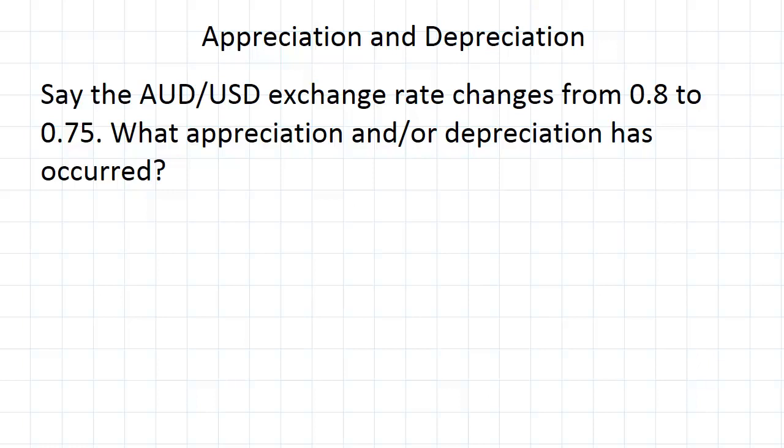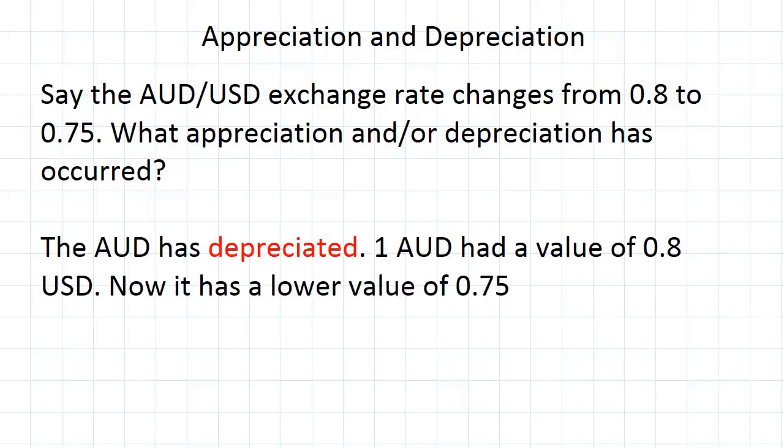If we look at the Australian dollar, it was worth 0.8 US dollars or 80 US cents and then it became worth 0.75 US dollars or 75 US cents. So we can say that this is a decrease in value. In other words, the Australian dollar has depreciated against the US dollar.